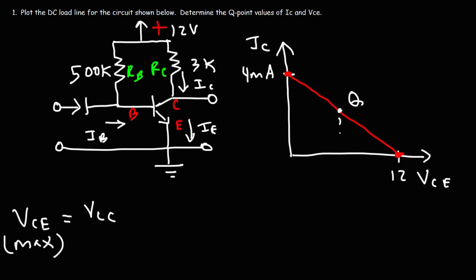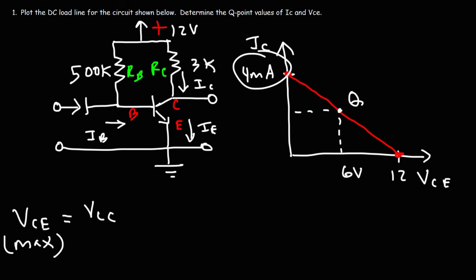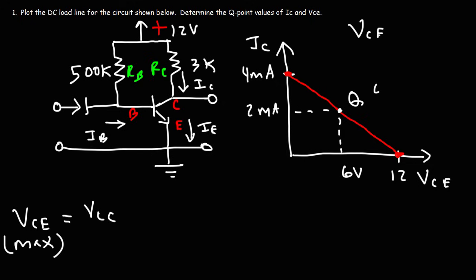The ideal Q-point is when VCE is half of VCC — so that's going to be 6 volts — and the collector current is half of the maximum saturation collector current, which is 2mA. These are the center point Q values: VCE equal to 6V and IC equal to 2mA.